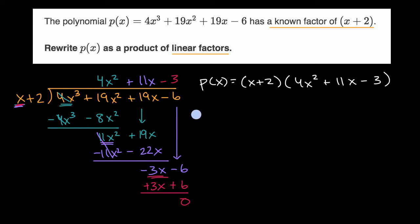And so we need to think of two numbers whose product is equal to 4 times -3. So we have to think of two numbers, let's just call them a and b. a times b needs to be equal to 4 times -3, which is -12. And a + b needs to be equal to 11.